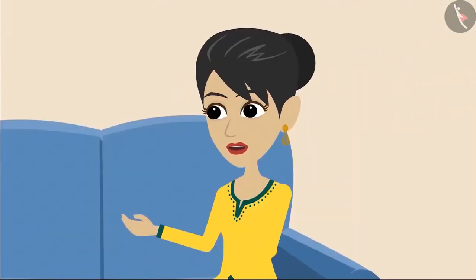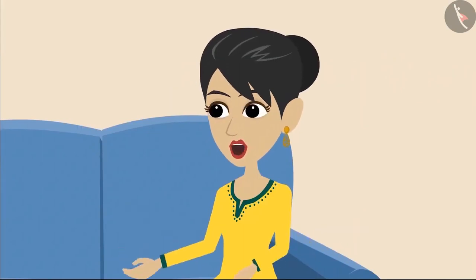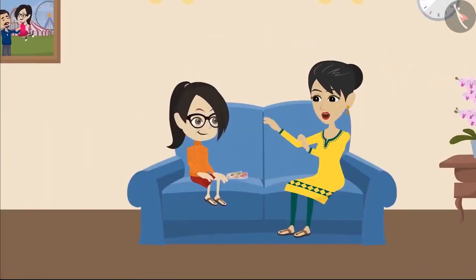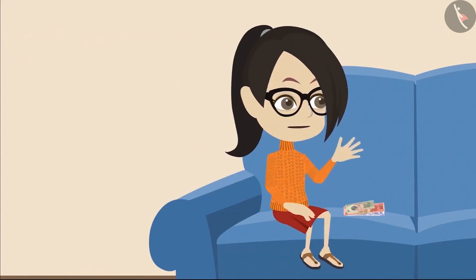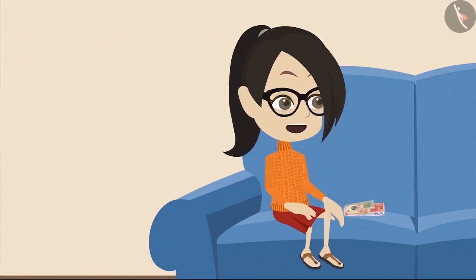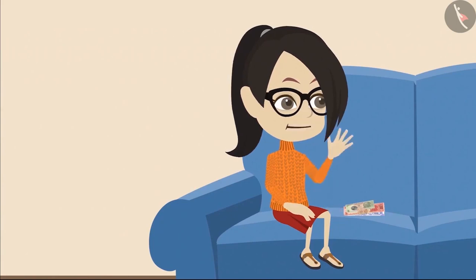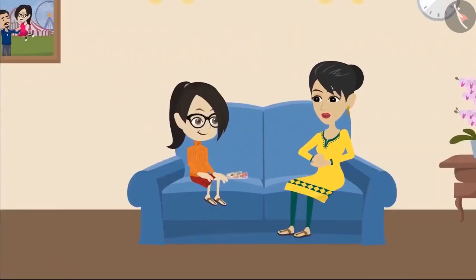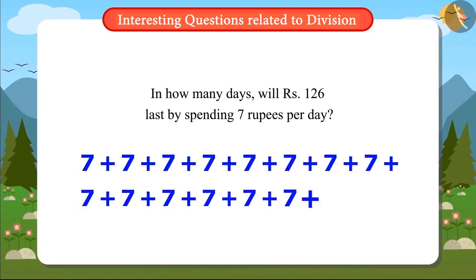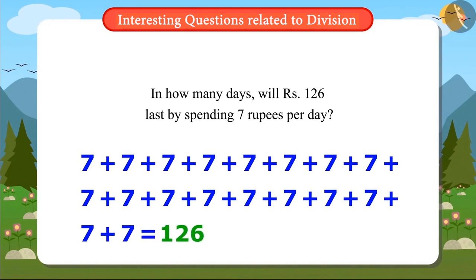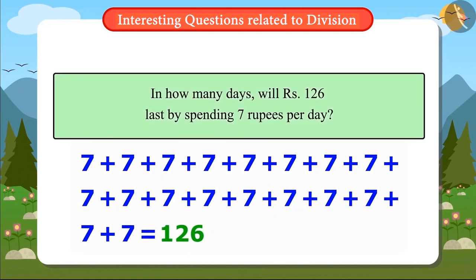Vandana, I saw that you found the answer to this question by subtracting 7 again and again. But you can also use division rather than subtracting the number this way. But Mummy, how can we use division? Division is used when we want to divide things into equal parts, right? Do you think Mummy is correct?